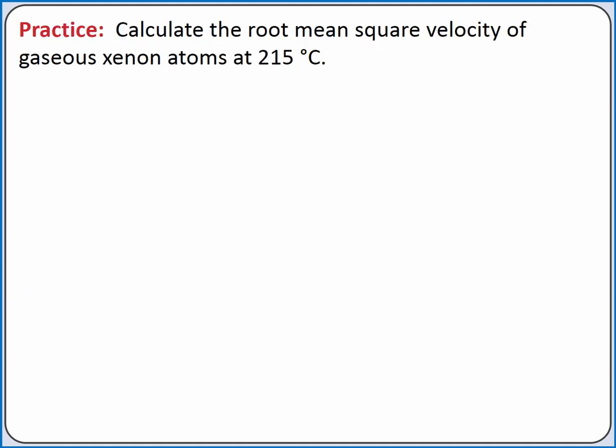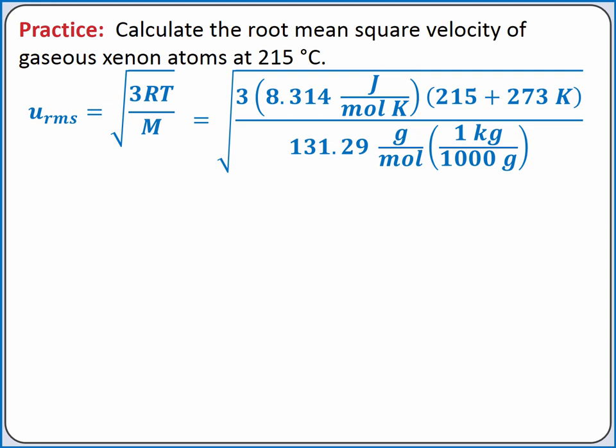Let's practice with our root mean square velocity equation. Our problem reads: calculate the root mean square velocity of gaseous xenon atoms at 215 degrees Celsius. We'll start with our root mean square velocity equation. In this equation, we need to use the value of the ideal gas law constant with units of joules per mole Kelvin. We also need to convert our temperature to Kelvin and our molar mass from grams per mole to kilograms per mole.